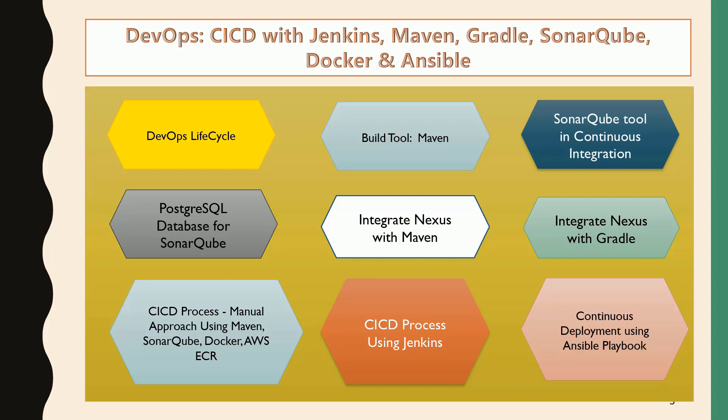First we'll understand the manual approach using Maven, SonarQube, Docker, AWS ECR, and once you have confidence in the manual approach, we'll do the same CI/CD process using Jenkins. Finally, we'll understand continuous deployment using Ansible playbooks. This course introduces Docker, Maven, SonarQube, AWS ECR, Jenkins, and Ansible — it's a complete package.